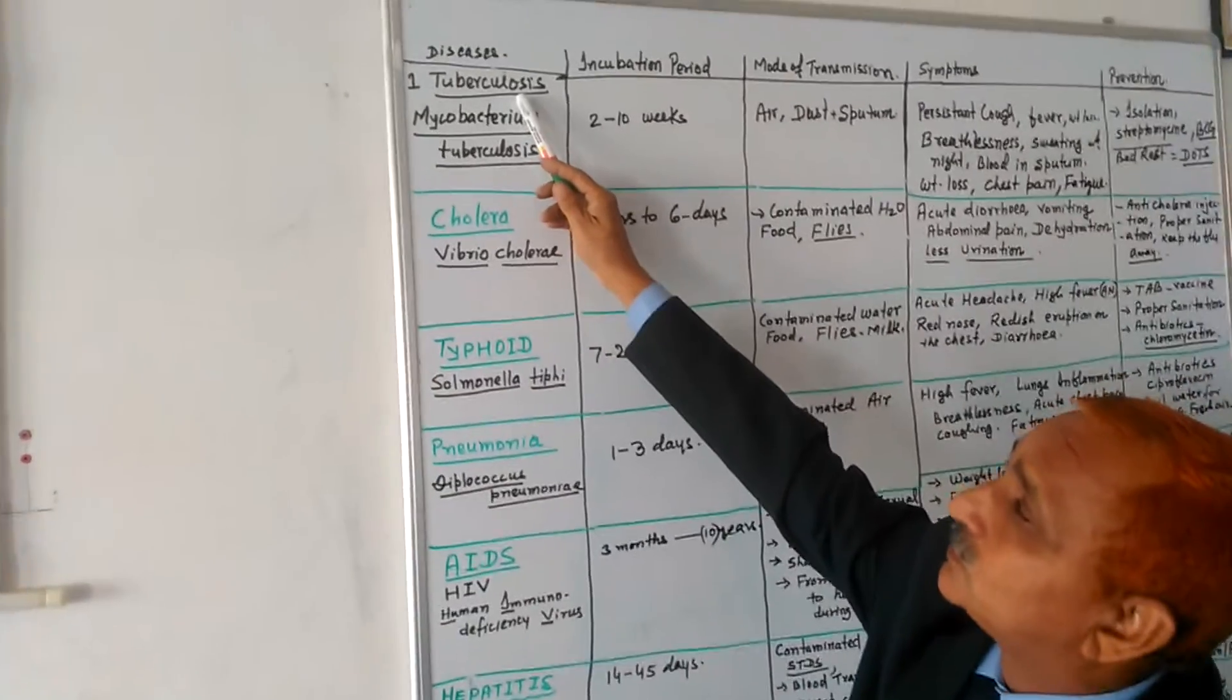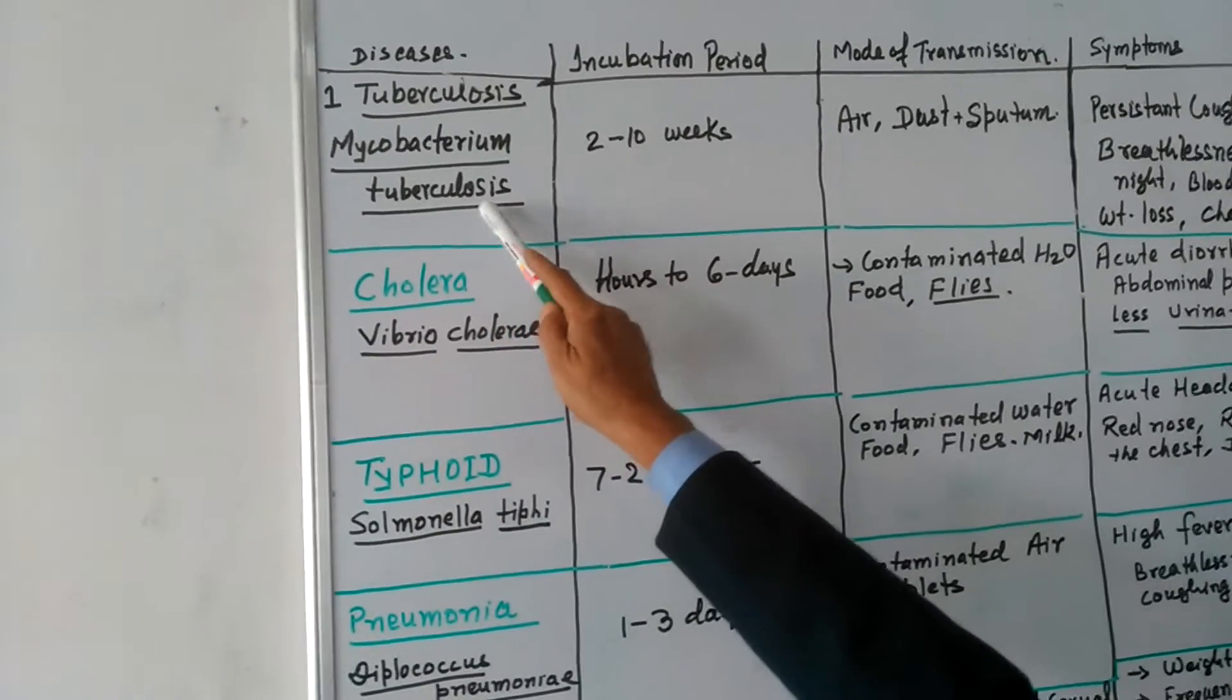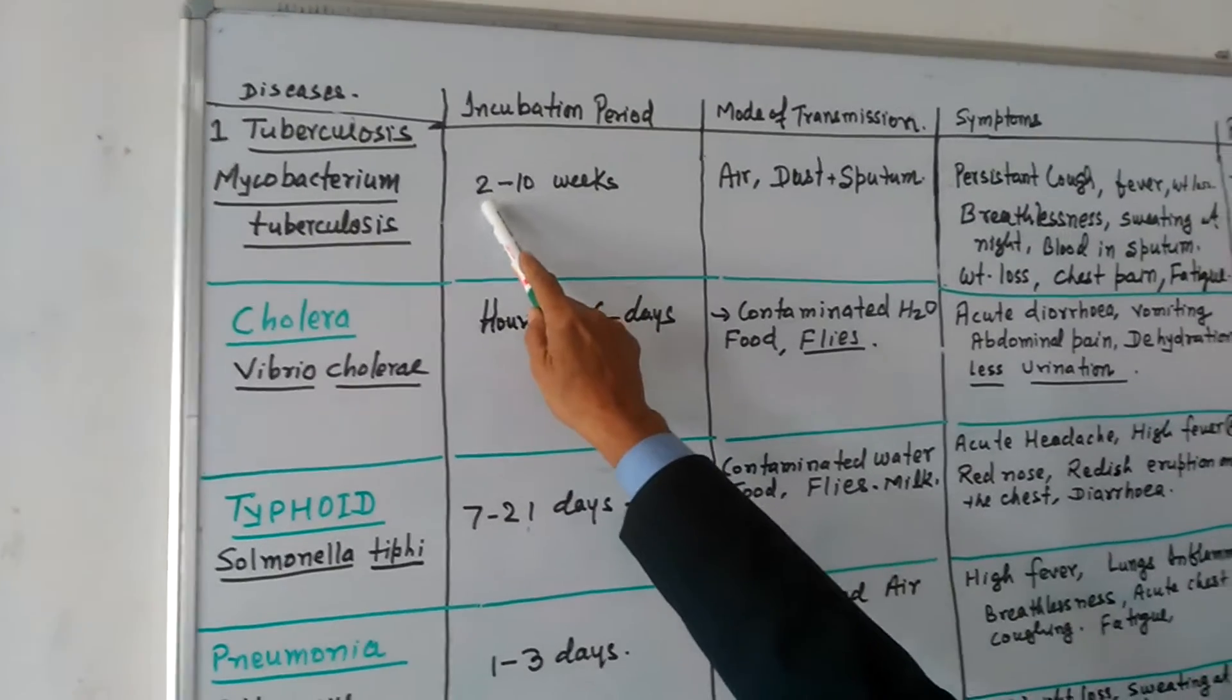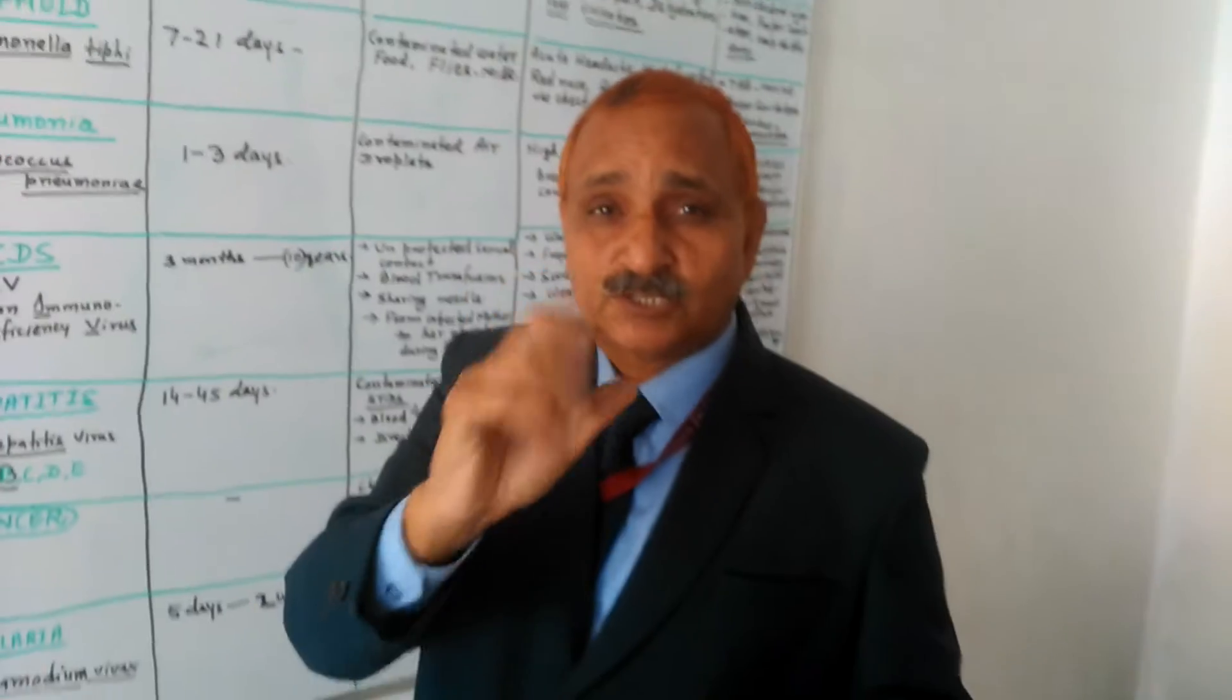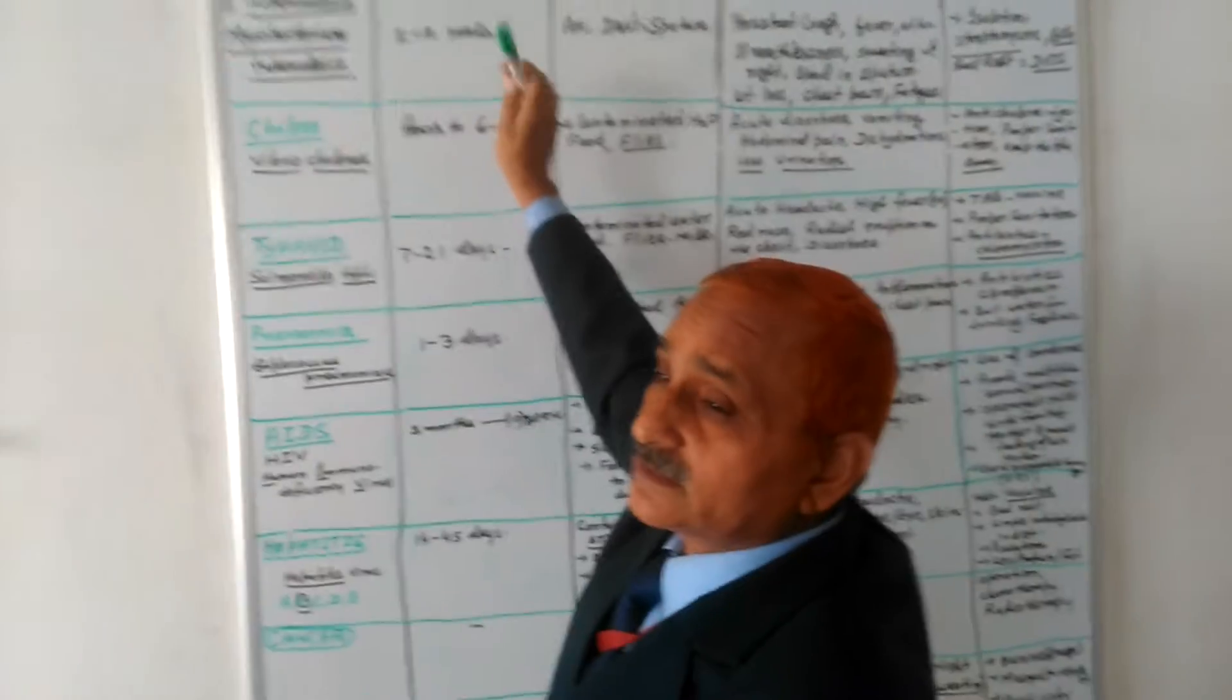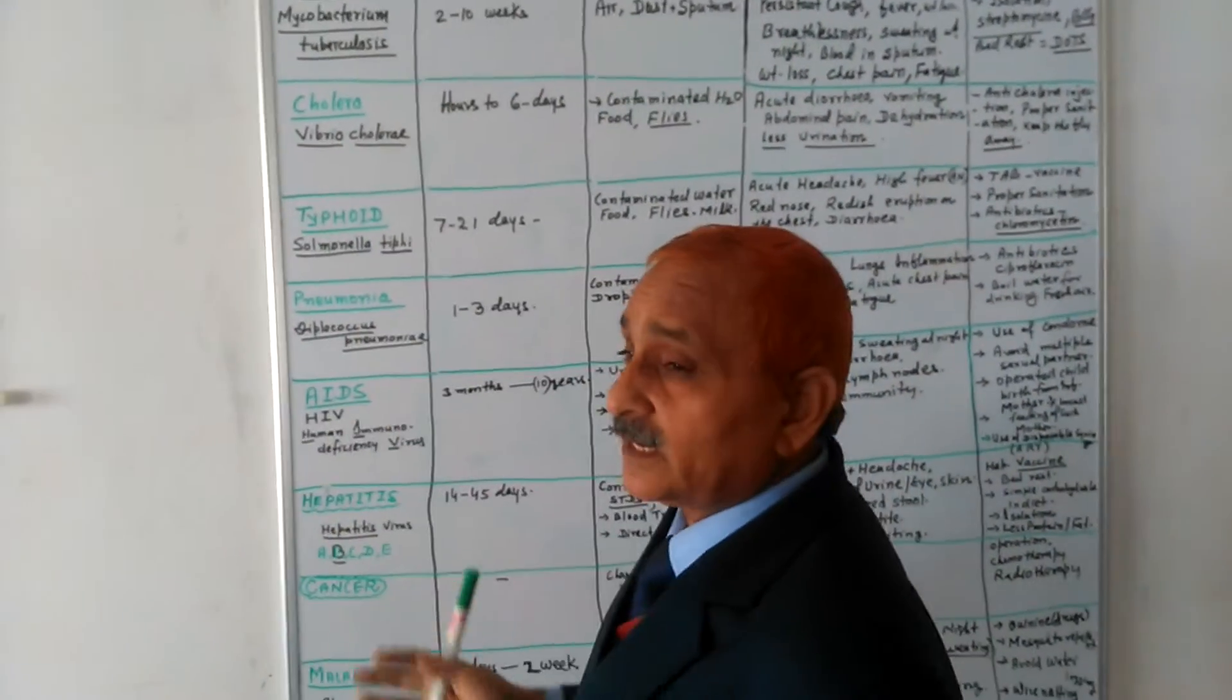So first is your tuberculosis. The causal organism is Mycobacterium tuberculosis, which is a bacterium. And its incubation period is 2 to 10 weeks. When we get the infection, after 2 to 10 weeks you will get the symptoms.